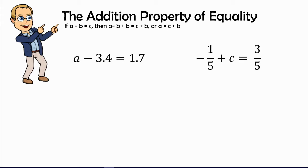In solving our first problem, we look at a minus 3.4 equals 1.7. Now we look at the constant that is attached to the variable. So what is attached to the letter a? 3.4. And how is it attached? It's attached with a negative sign or a subtraction sign. So we ask ourselves, what is the opposite of subtraction? That would be addition. So we are going to add 3.4 to both sides of the equation.